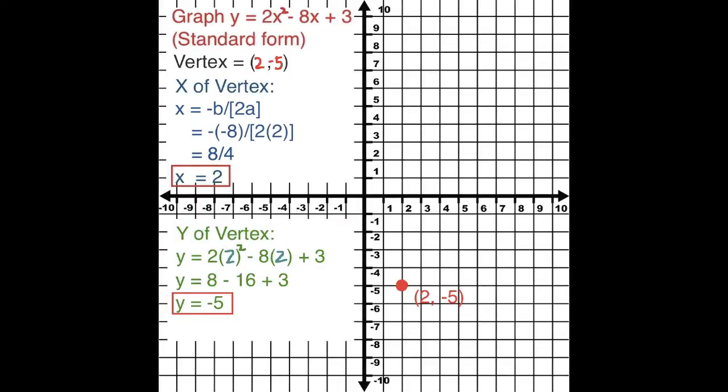What do I do next? I know, draw the axis of symmetry so it passes through the x coordinate of the vertex, makes a nice mirror so your points reflect.